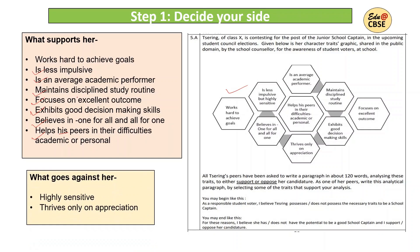Now talking about the weaknesses — these two things go against her: she is highly sensitive, and she thrives only on appreciation. When you have these two columns in front of you, you can decide which side to write. The points in her favour are more in number, so I am going to write in favour. I will show you both sides — one paragraph in favour and one against — but in your exam you have to write just one side.